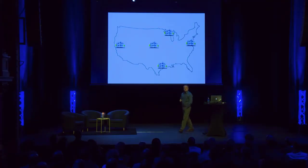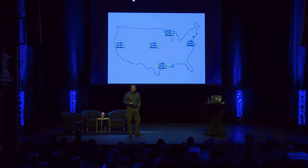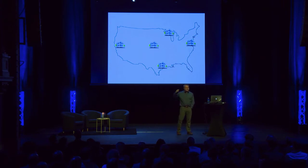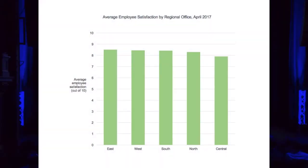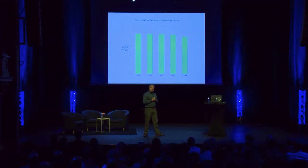First scenario. Our organization is doing okay. We've got five regional offices — north, south, east, west, and central — and we've recently done some surveys amongst our employees to gauge their level of satisfaction. You're a BI analyst asked by management to graph this data for a management meeting. Here are the five regions with average employee satisfaction out of 10. All the values are pretty much the same — they fall around eight — and they're so close together it's hard to see the differences between them.